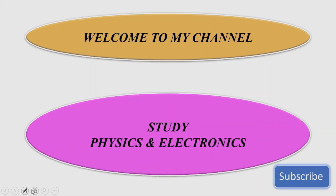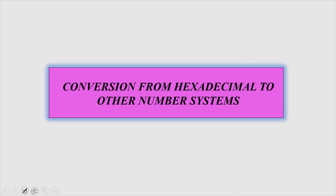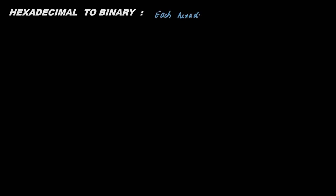Hello friends, welcome to this series on digital electronics. Now we are going to discuss conversion from hexadecimal number system to other number systems. First, hexadecimal to binary. For converting a hexadecimal number to binary, each hexadecimal digit should be replaced by 4 bits.